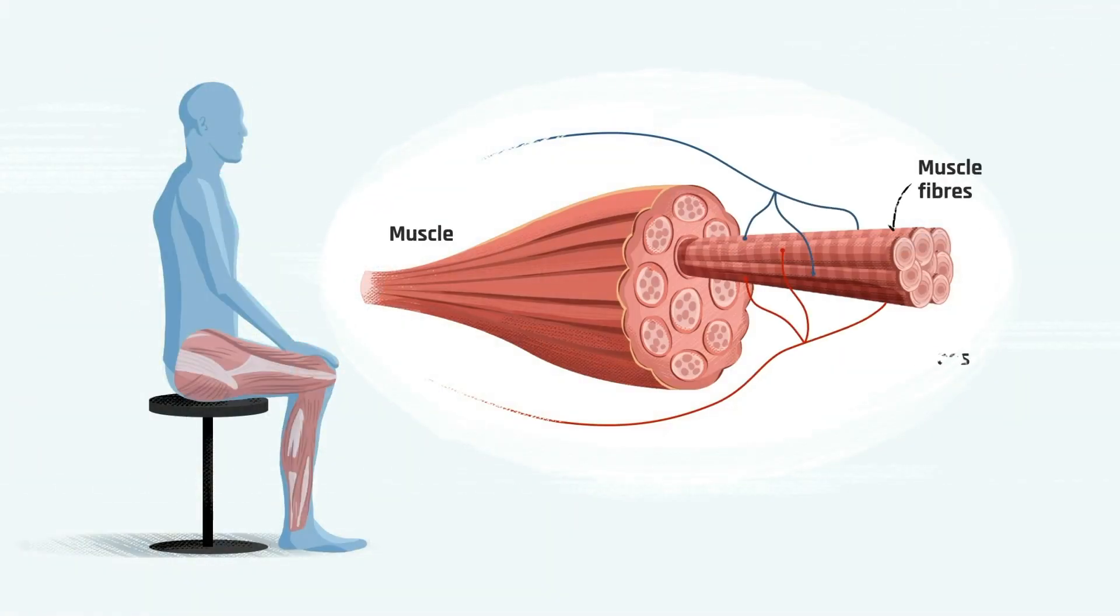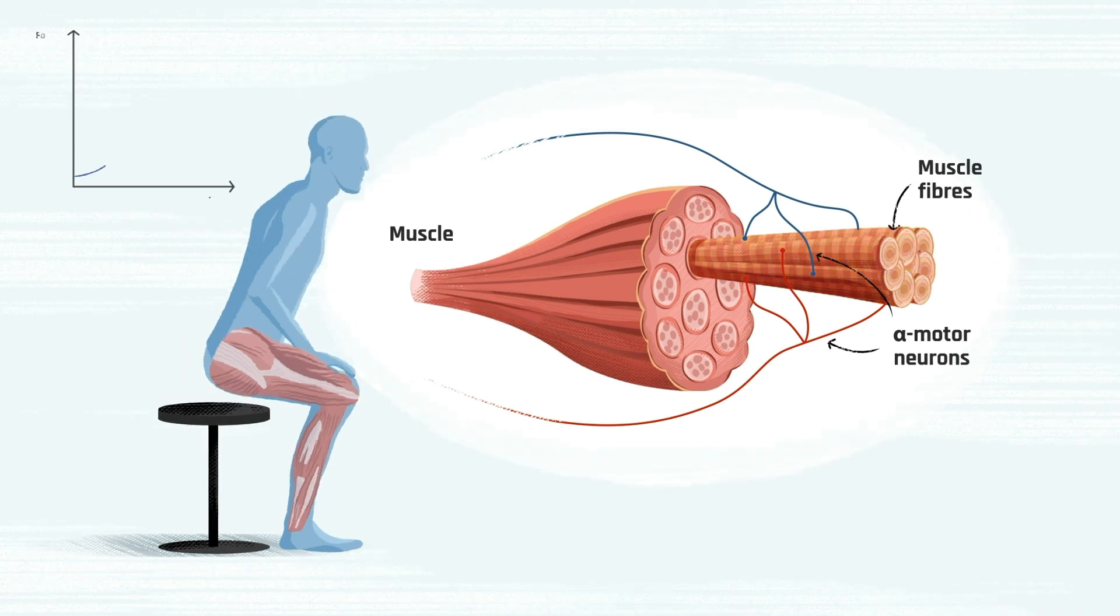Muscles consist of bundles of fibers, innervated by motor neurons. Upon receiving a signal from the brain, the motor neurons activate these fibers, causing them to contract and generate force.